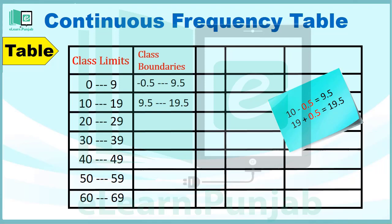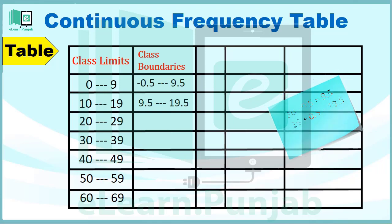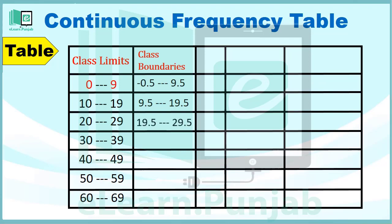اسی طرح سے ہم Class Limit کی تمام Values کے Start سے 0.5 minus کریں گے اور End میں 0.5 add کرکے Class Boundaries کی تمام Values مالوم کریں گے: 19.5 to 29.5، 29.5 to 39.5، 39.5 to 49.5۔